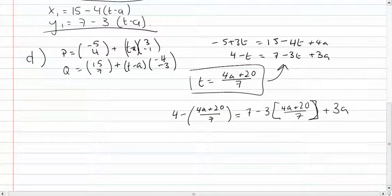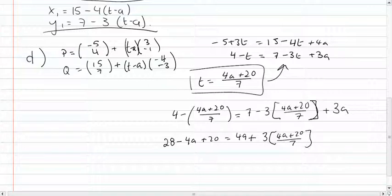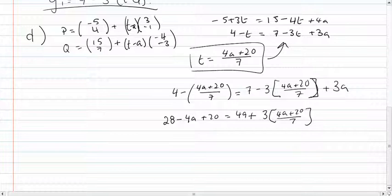Just so we're not working with fractions, we'll get rid of the 7 here. We'll multiply everything by 7. So you end up with 28 minus 4A plus 20 equals 49 plus 3 into 4A plus 20. Once we solve for A, we find that A is equal to 19 over 13.